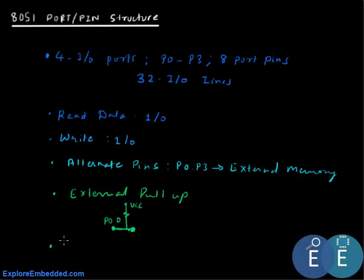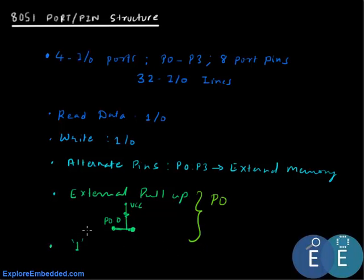The second thing is: whenever we are using the 8051 as input, a 1 needs to be written on the port pin first. We will see why port 0 requires a pull-up and why 1 needs to be written before you can use any of the pins to read data. If you simply want to use the port pins as digital I/O, just remember these two things and you are ready to program the controller.